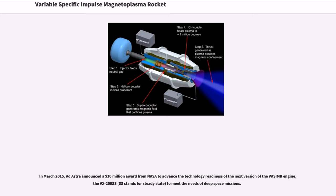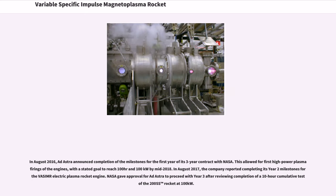In March 2015, Ad Astra announced a $10 million award from NASA to advance the technology readiness of the next version of the VASIMR engine, the VX-200 SSTM, to meet the needs of deep space missions. In August 2016, Ad Astra announced completion of the milestones for the first year of its three-year contract with NASA. This allowed for first high-power plasma firings of the engines, with a stated goal to reach 100 hours at 100 kW by mid-2018. In August 2017, the company reported completing its year two milestones for the VASIMR electric plasma rocket engine. NASA gave approval for Ad Astra to proceed with year three after reviewing completion of a 10-hour cumulative test of the VX-200 SS rocket at 100 kW.